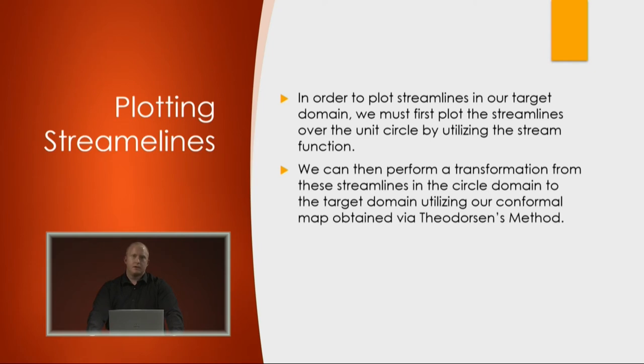Why it's important that we get our conformal map is that sometimes plotting streamlines can be rather difficult. But if you have a conformal map, you can just plot these streamlines in a simple place like the circle domain. And with the conformal map, you have a boundary correspondence and you can map from the circle to, say, an ellipse in this case. And thus you have the streamlines over your target now.